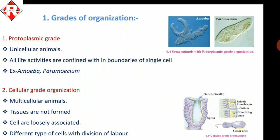The first criterion is body organization. The first type is protoplasmic grade, present in unicellular animals like amoeba and paramecium. In this grade, all life processes necessary for survival are carried out within the cell boundary with the help of cell organelles.